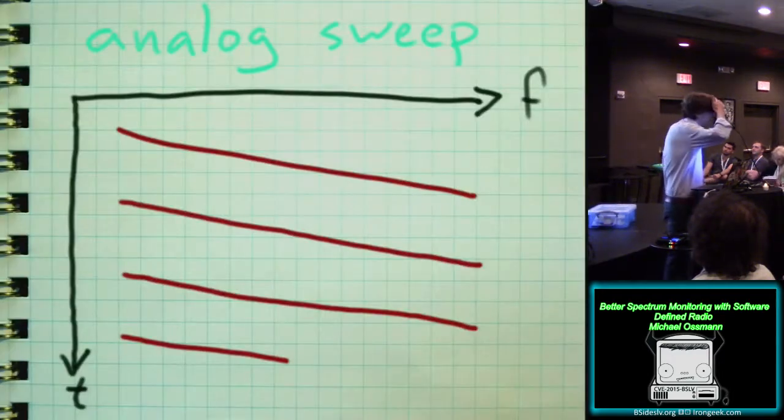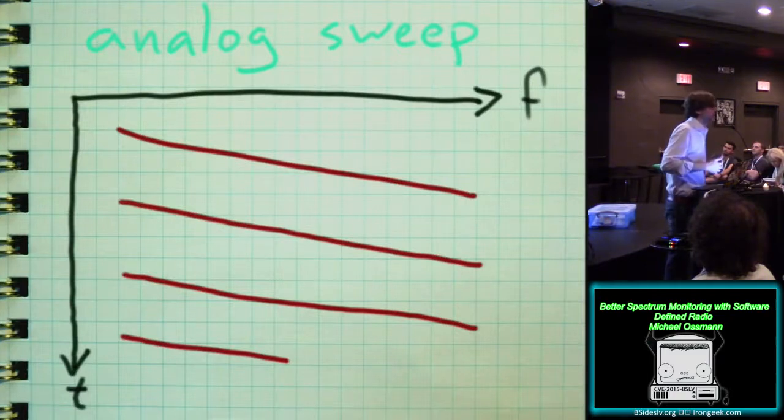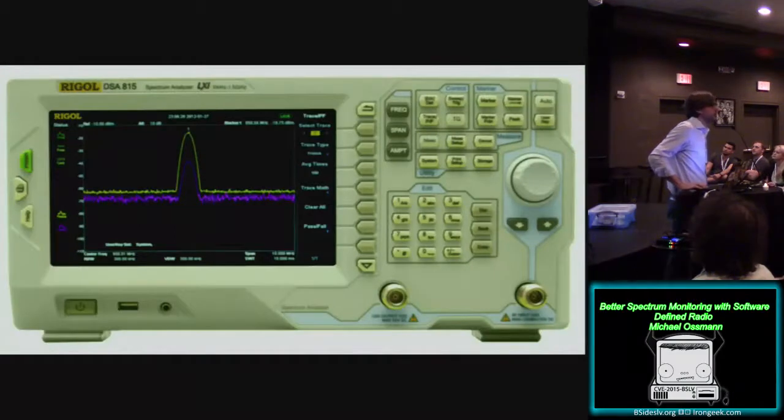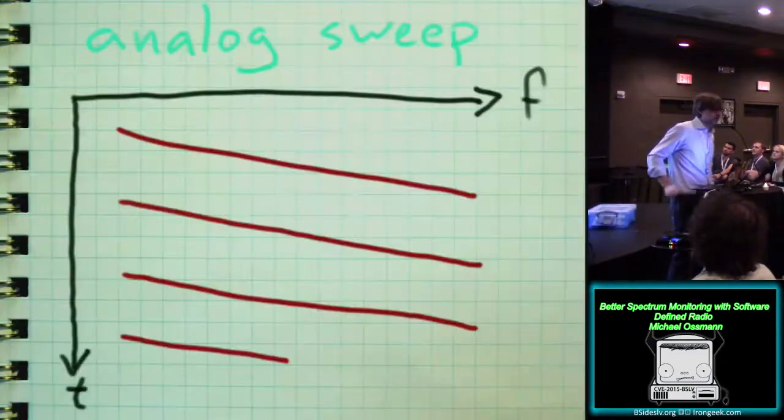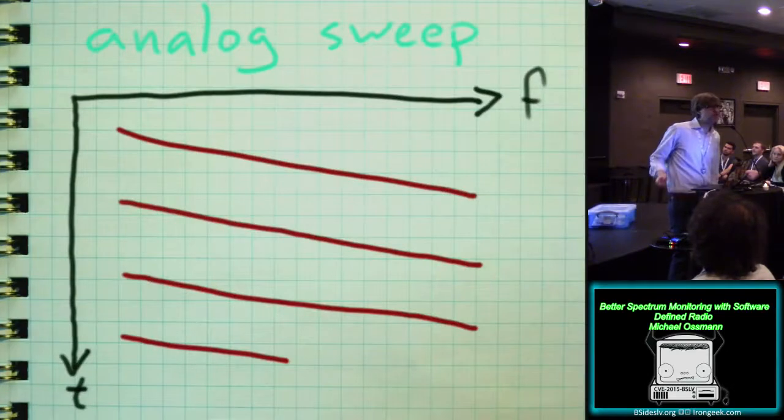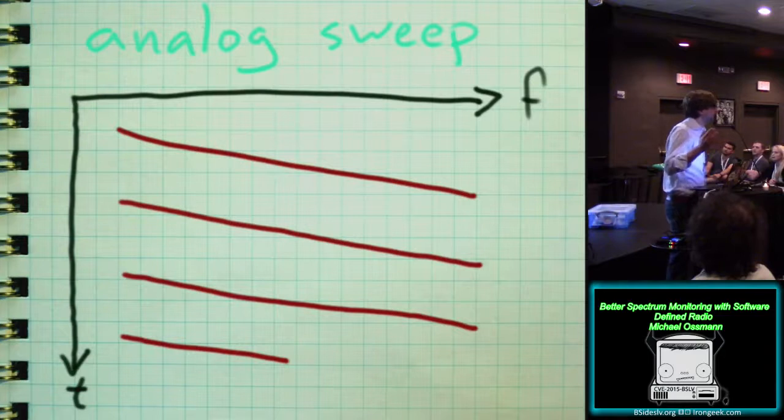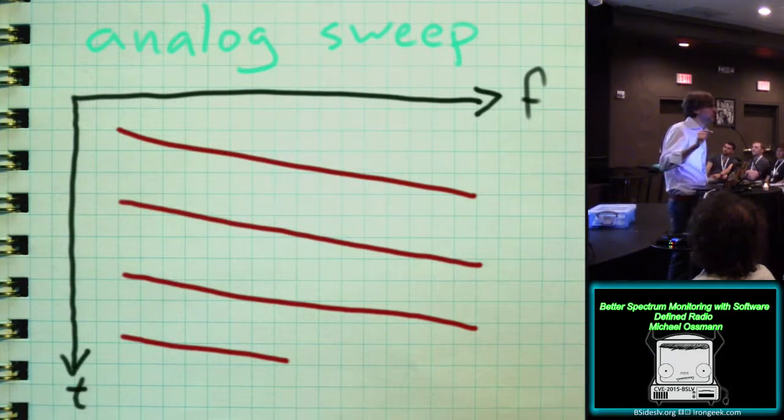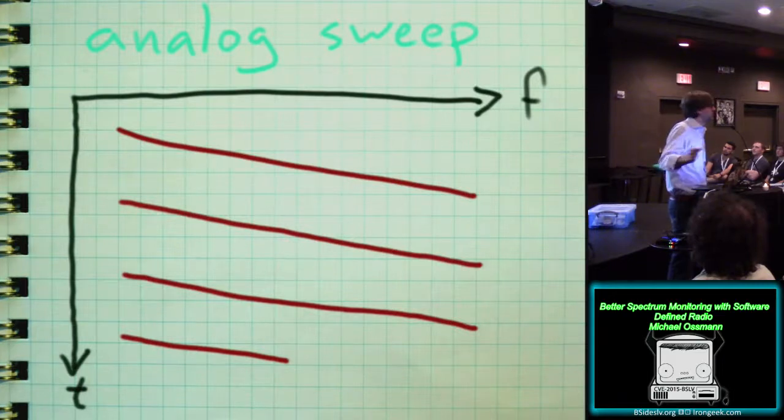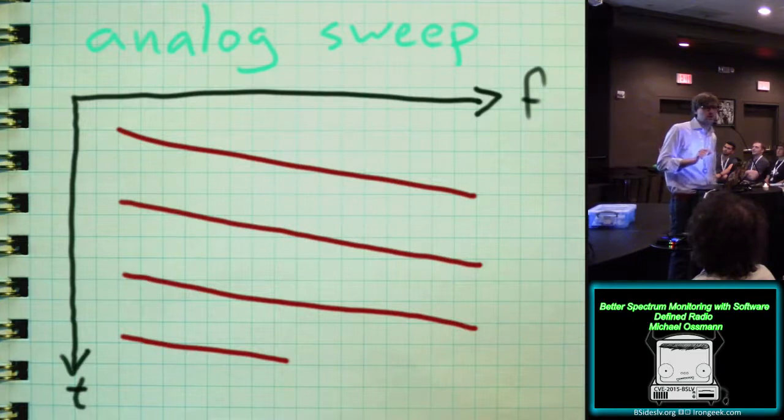And this is the cheapest spectrum analyzer I could find that has as much bandwidth, operating frequency range I should say, as a HackRF. And it is I think $8,000, something like that. So it's a big jump in cost to go to some of these more traditional solutions for spectrum monitoring. But here's how they work. Assuming that you're using a swept spectrum analyzer, or the lower-cost type of spectrum analyzers, as opposed to the real-time spectrum analyzers, it works like this. Over time, it tunes a radio receiver. It sweeps the frequency. And so the red line here in this plot shows you how the frequency is increased over time, and then it jumps back to the beginning, and it's increased over time, and then it jumps back to the beginning, and it's increased over time.